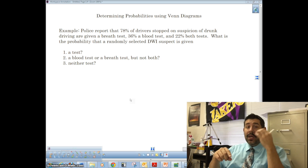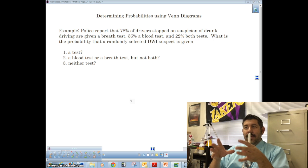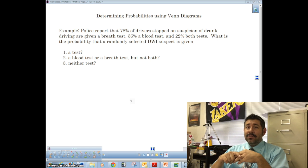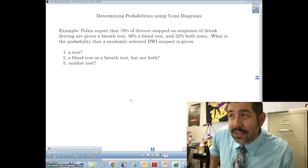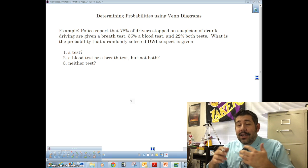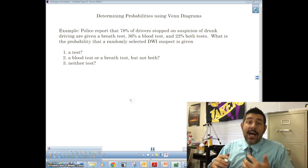But what happens if they are not disjoint? Can we still use the addition rule? And the answer to that is kind of yes. And what happens if they are not independent? Can we still use the multiplication rule? And the answer of that is kind of yes. So one of the things that happens is sometimes we have a case where we can use what we call a Venn diagram.